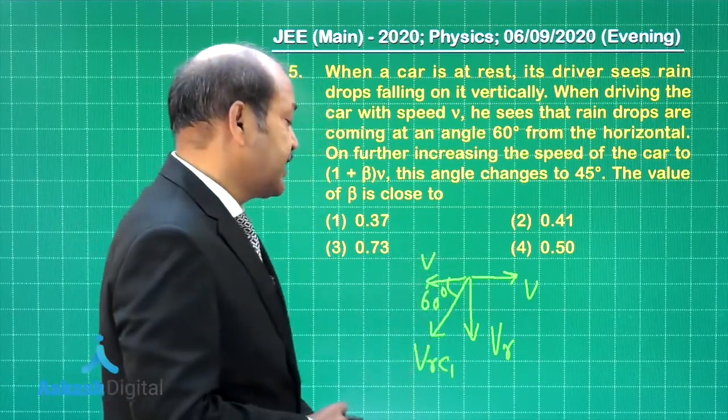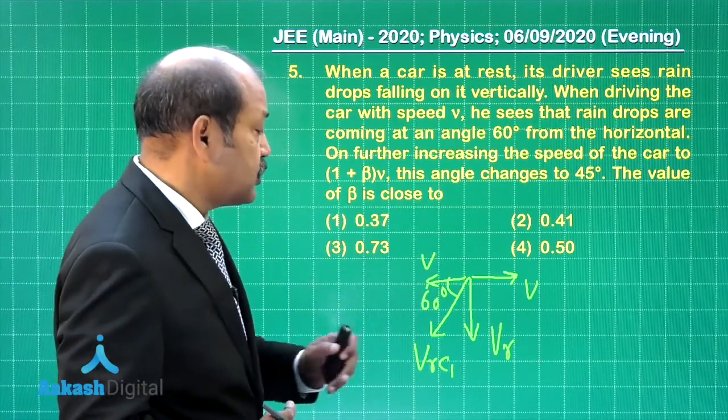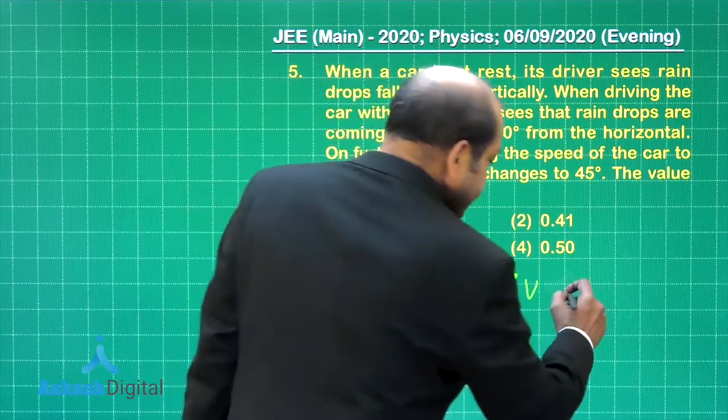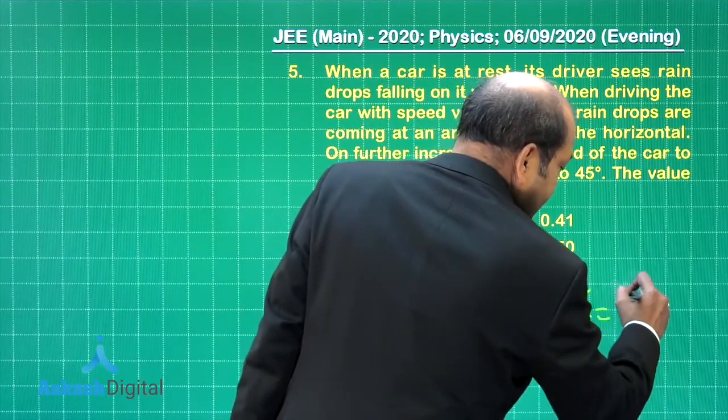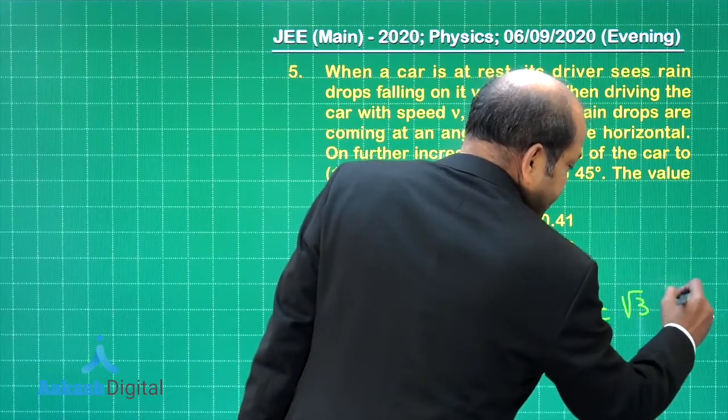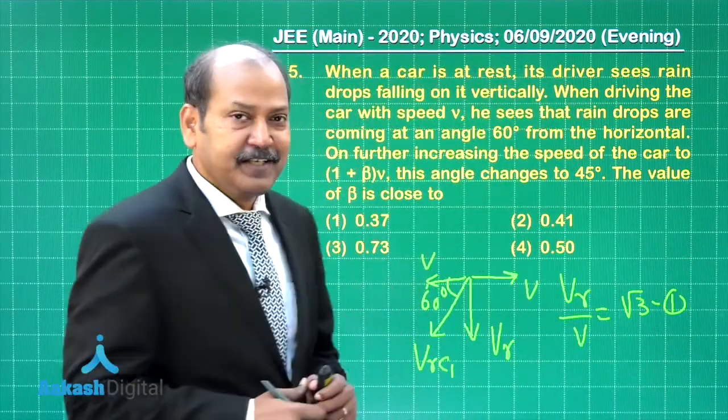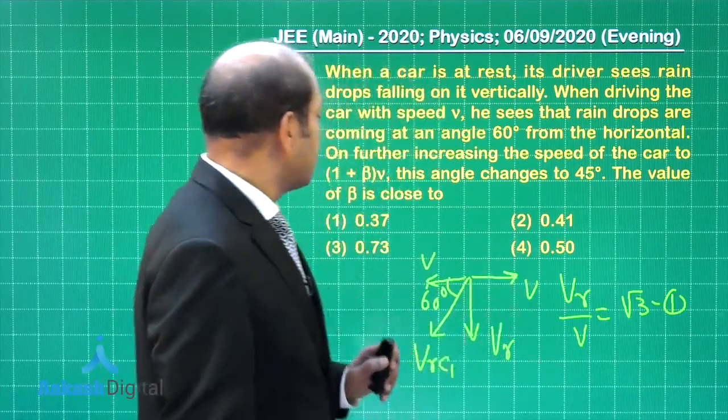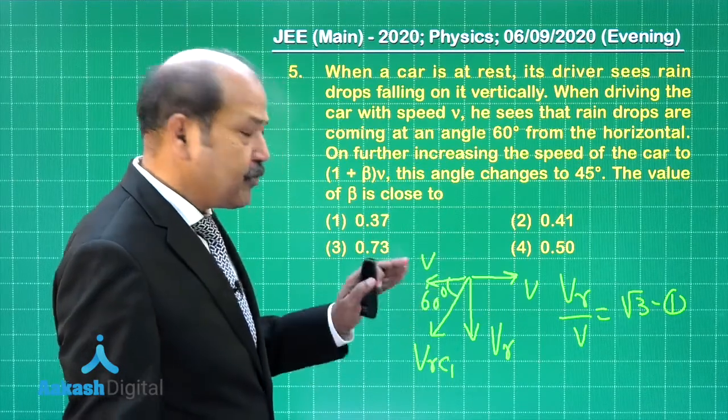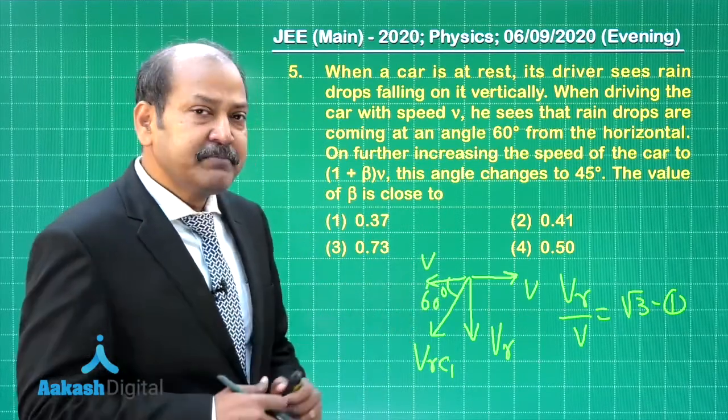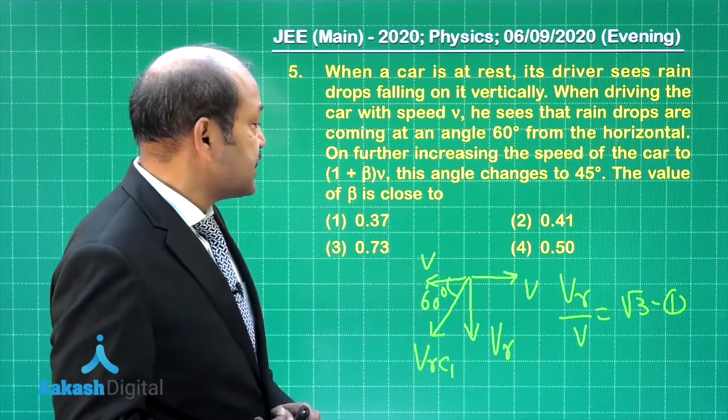So that helps us find a relation between the velocity of the rain and the velocity of the car. Now because tan 60 degrees is root 3, the value of tan 60 degrees is also equal to vr by v. So let us write it here, vr by v is tan 60 degrees, that means root 3. This is one equation which will be handy for solving the question. Now when the speed of the car is increased to 1 plus beta times v, the angle changes to 45 degrees. What does it mean? It means that vr is in fact equal to 1 plus beta times v.